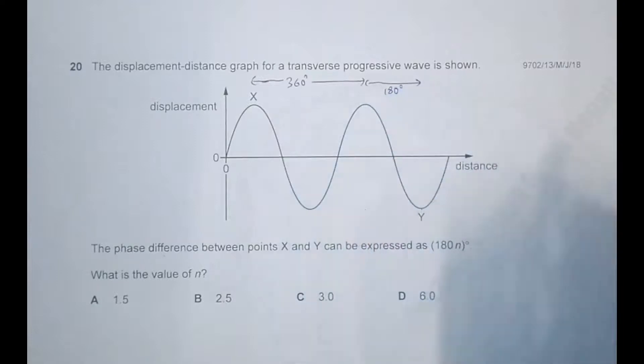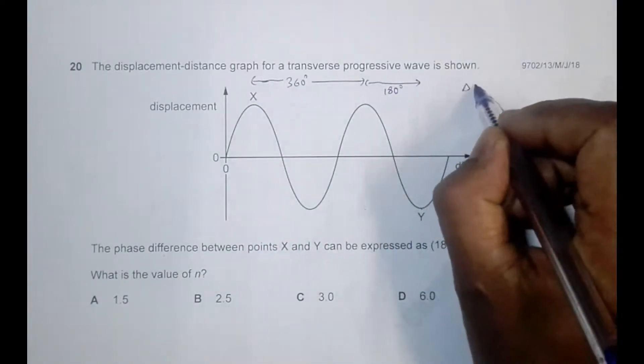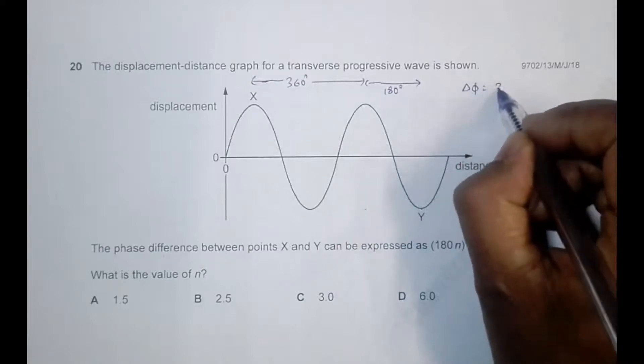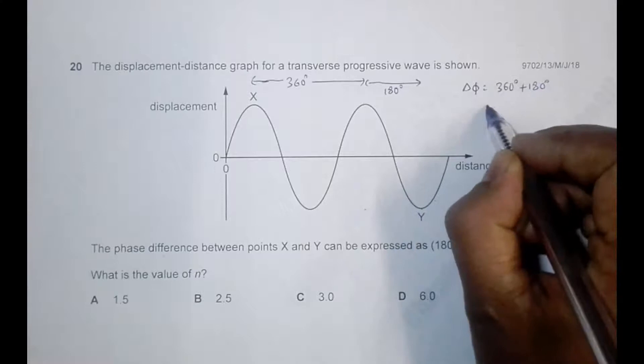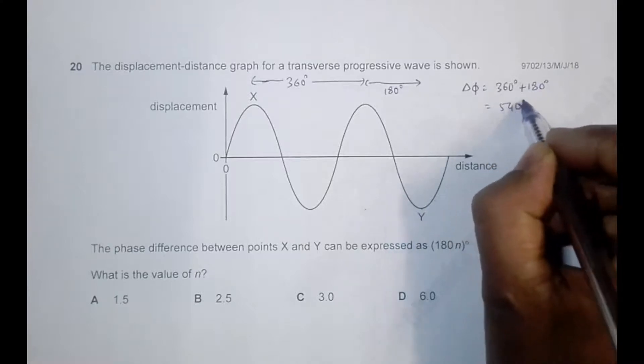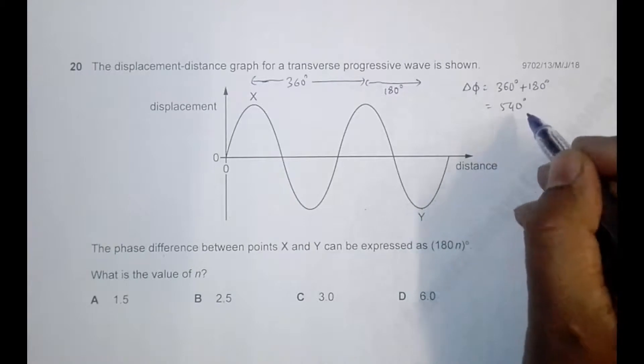180 degrees. So the total phase difference will be, we'll call it Delta Phi, that's equal to 360 degrees plus 180 degrees, that's equal to 540 degrees. And if I express it in terms